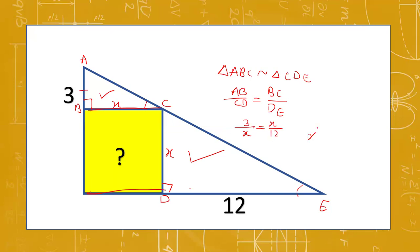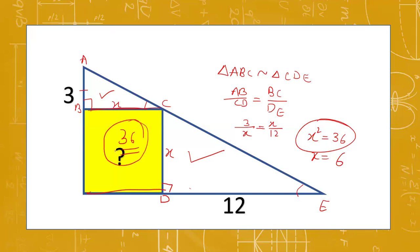Cross multiplying, x squared equals 3 times 12, which gives x squared equals 36. So the area of this square is 36. Whenever we need to find the area of this square under these conditions, simply multiply the two given values to get the area.